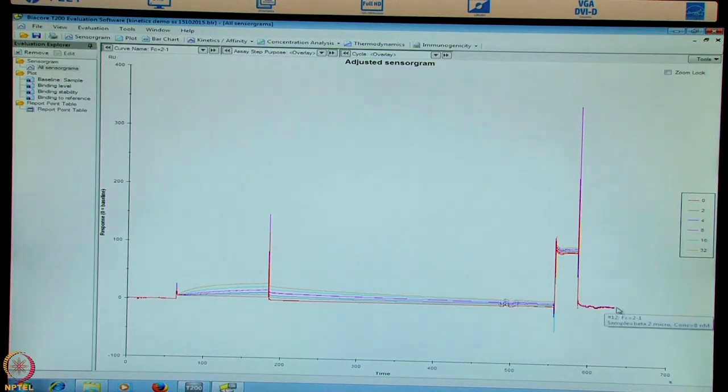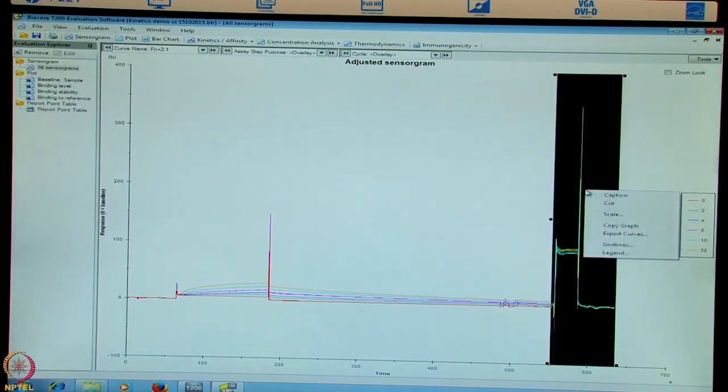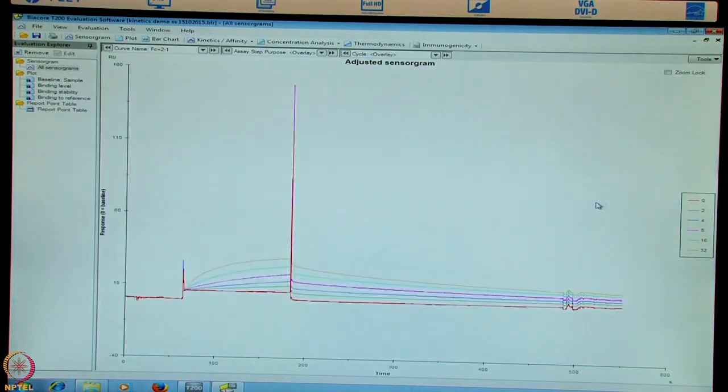Here as well, like binding, we will right click on the mouse and cut away this portion. And now this is our actual data with the different concentrations of beta-2M injected on the surface. To evaluate this data, we can go into the kinetic and affinity mode.